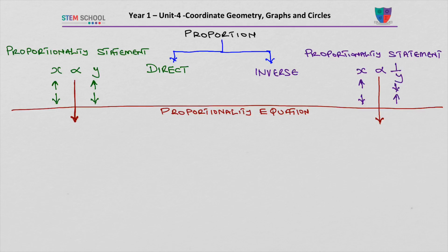We can turn a proportionality statement into a proportionality equation. To turn a proportionality statement into an equation, we change the alpha (∝) to equals k. So for direct proportionality we write x = ky, and for inverse proportionality we write x = k times 1/y.